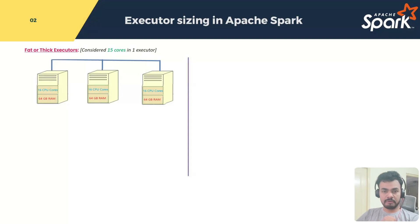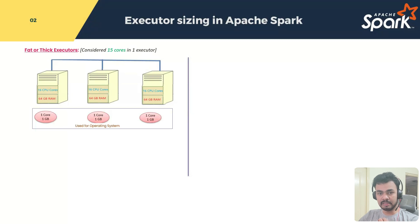Now everybody knows that these are the machines which run on some OS. For that OS, definitely some configuration is required to maintain the machines. Here you can assume one core, 1 GB is for OS. So minus this one core, 1 GB from the actual capacity of that machine. If I ignore one core, 1 GB, then 15 cores, 63 GB is my net available resources inside the machine.